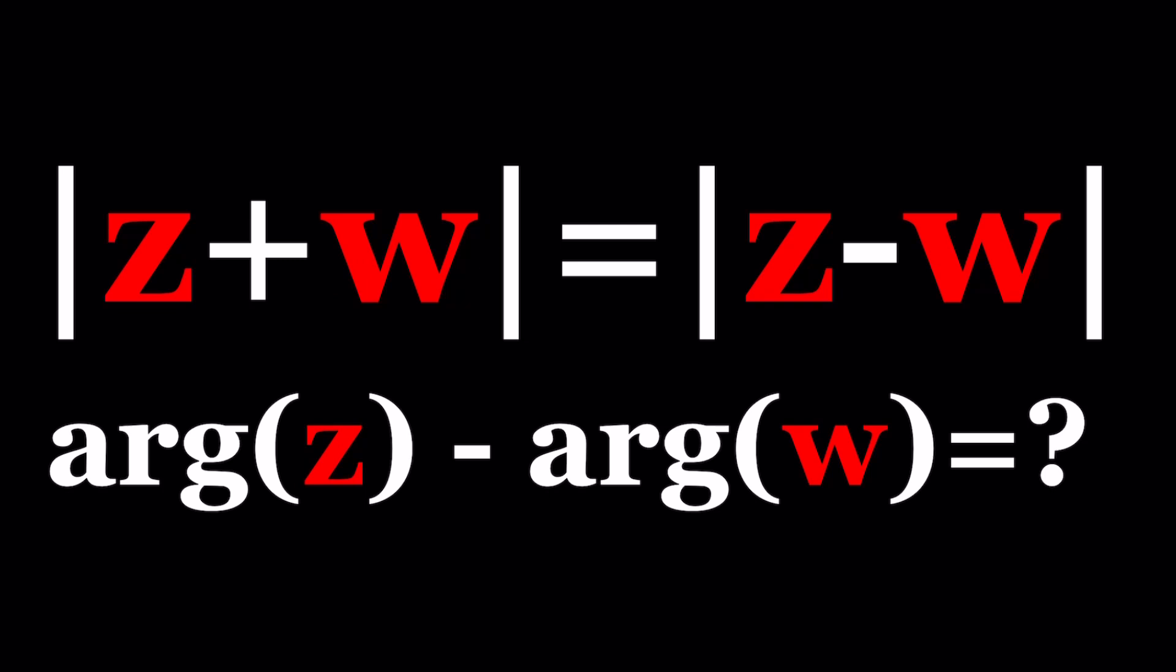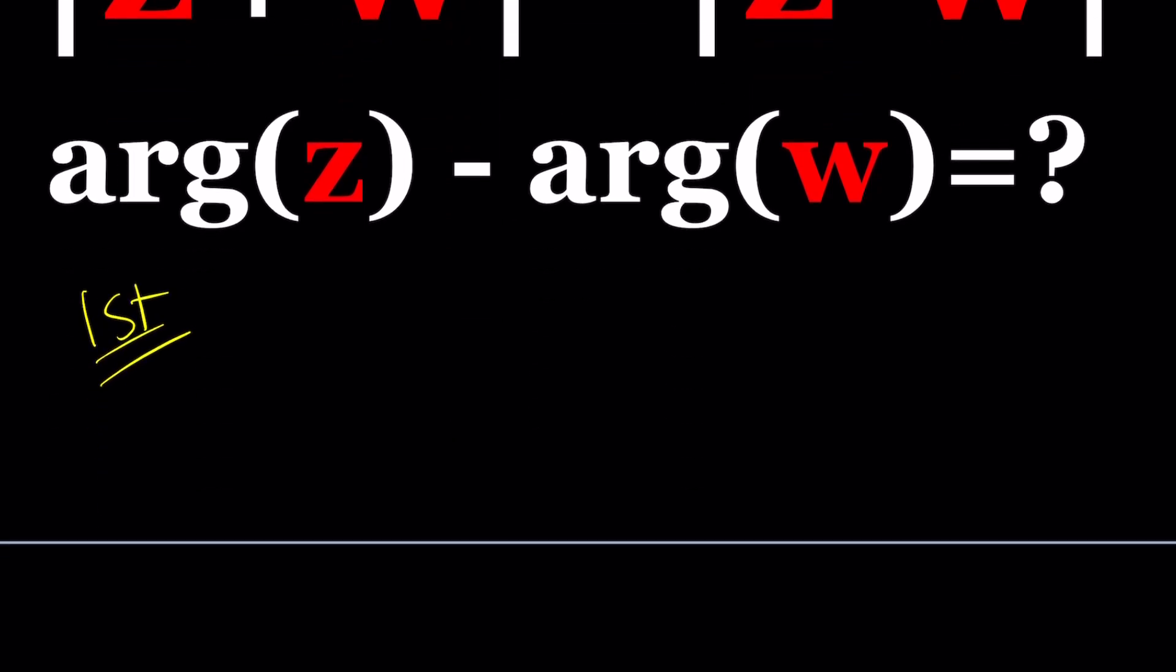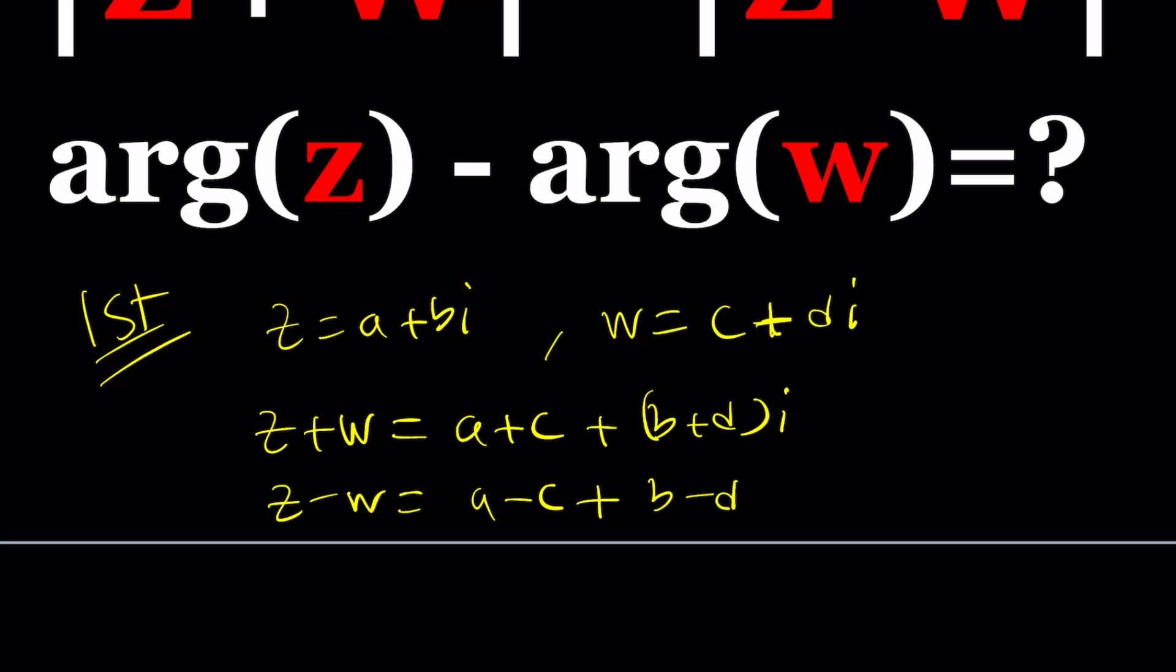First method, I'm going to replace z with a plus bi, and w with c plus di. A plus bi is an important concept because it's the name of this channel. If you add z and w, you get a plus c plus b plus d times i, and if you subtract them, you get a minus c plus b minus d as the imaginary part times i.